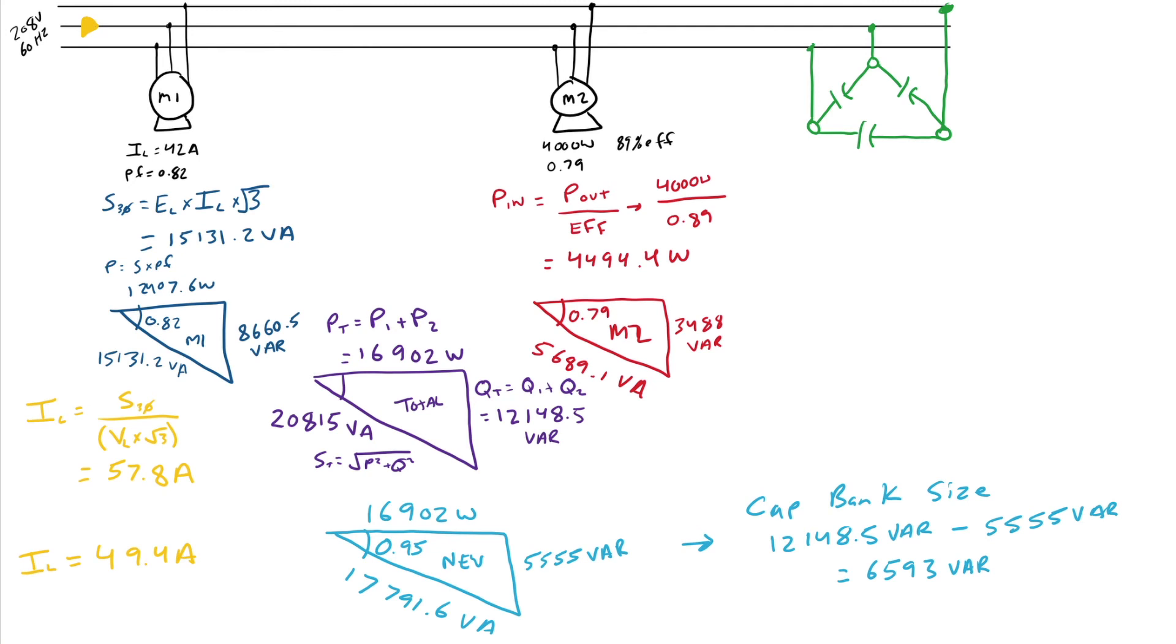Keeping in mind, with a capacitor bank, because it is purely capacitive, my VARs equal my VA. Or, my S equals my Q. So, now that I know how big the size of the required delta capacitor bank needs to be, 6,593 VARs. I want to break it down a little bit more, though. I want to break it down into the actual capacitance.